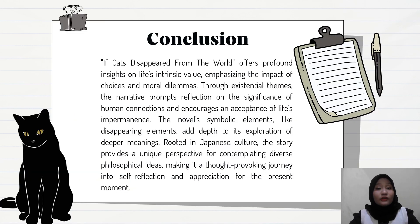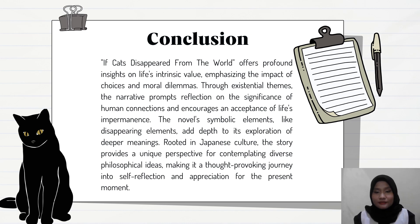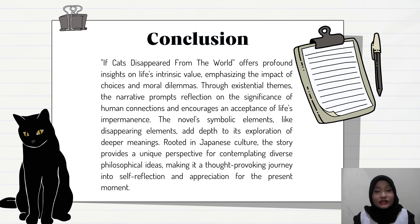The last thing we're going to talk about is the conclusion. 'If Cats Disappeared from the World' offers profound insight on life's intrinsic value, emphasizing the impact of choices and moral dilemmas. Through existential themes, the narrative prompts reflection on the significance of human connection and encourages an acceptance of life's impermanence. The novel's symbolic elements add depth to its expression of different meanings. Rooted in Japanese culture, the story provides a unique perspective for contemplating diverse philosophical ideas, making it a thought-provoking journey into self-reflection and appreciation for the present moment.